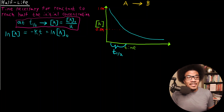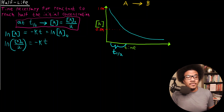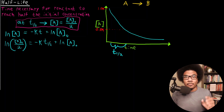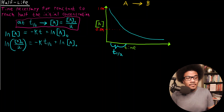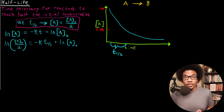At the half-life, at T one-half, this concentration will be equal to half of the initial. So we plug that in: LN of half the initial concentration equals negative K times T one-half, plus LN A-naught. At T one-half, we know the current concentration is half the initial concentration. Now the only thing we have to do is isolate T one-half to get an explicit expression for the half-life for any first-order reaction.